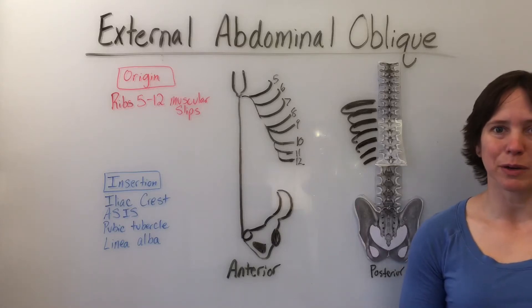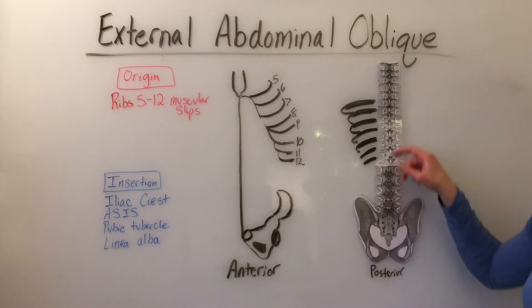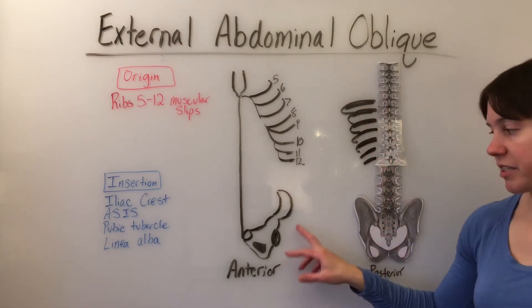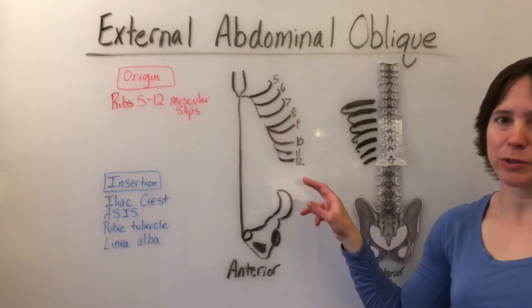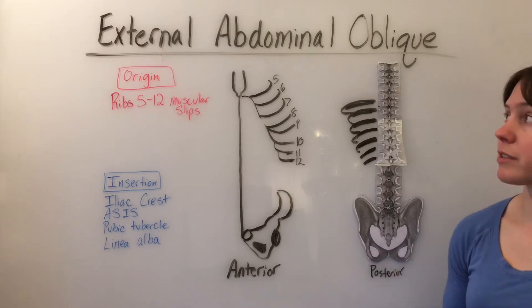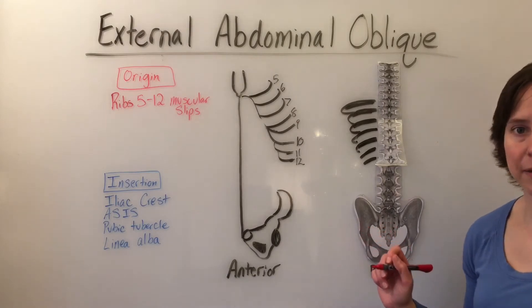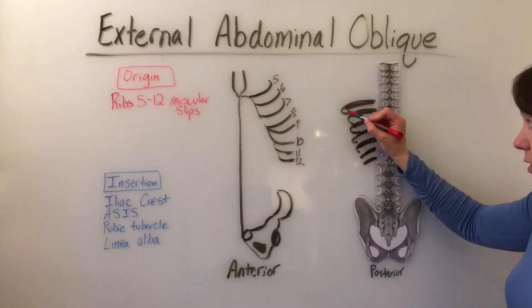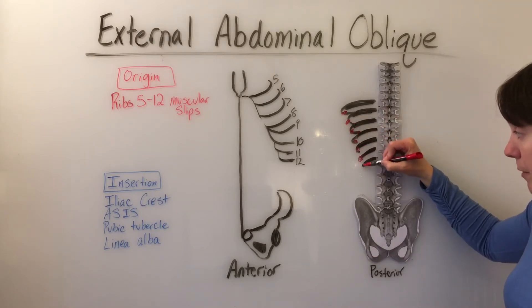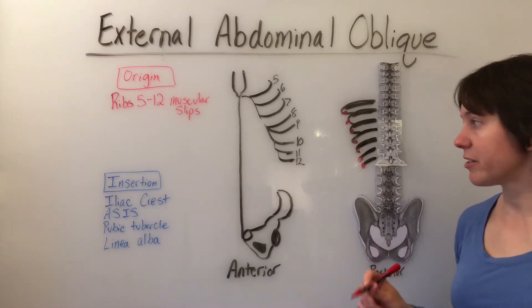To describe the external abdominal oblique, I have drawn the posterior pelvis and spine with ribs 5 through 12, and the anterior pelvis, linea alba, and costal cartilage of ribs 5 through 12. The origin of the external abdominal oblique are the muscular slips of ribs 5 through 12. You'll see them starting posteriorly on the ribs and they'll move around the trunk anteriorly.